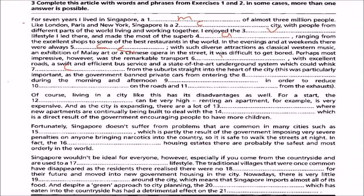It was difficult to get bored. Perhaps most impressive, however, was the remarkable transport infrastructure with excellent roads, an efficient bus service, and a state-of-the-art underground system which could whisk commuters from the suburbs straight into the heart of the city. Importantly, the government banned private cars from entering the CBD or central business district during the morning and afternoon.